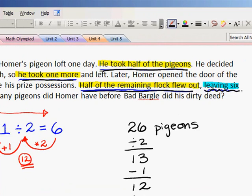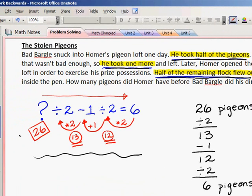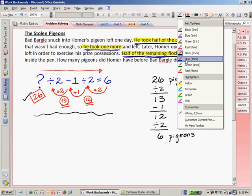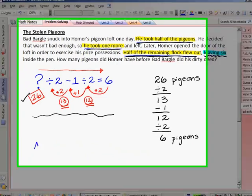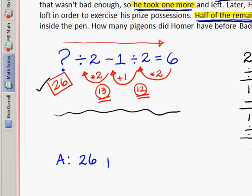So did we do our working backwards steps correctly? Yes, we did. So twenty-six was the correct answer. So let's go ahead and summarize that in a box, as I always mention. So the answer is twenty-six pigeons,